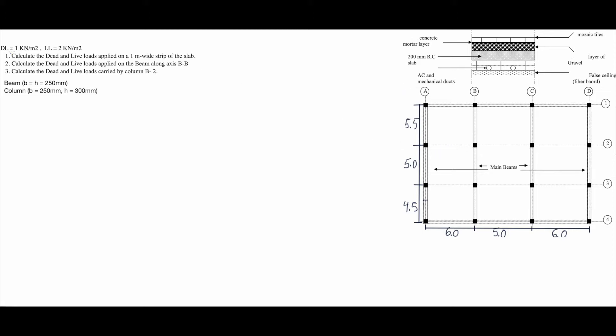So these are the questions. We have dead load 1 kilonewton per meter square, live load 2 kilonewton per meter square, and we have the beam and column section sizes given here.